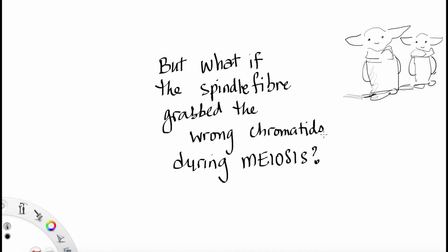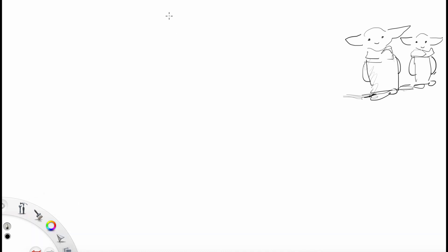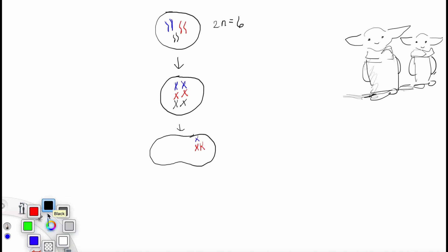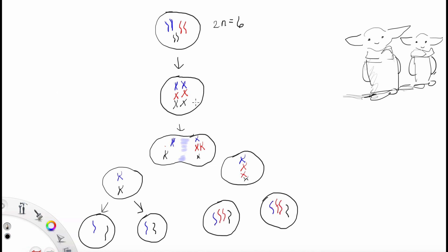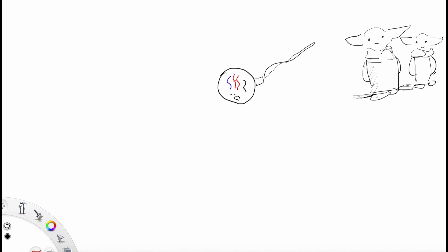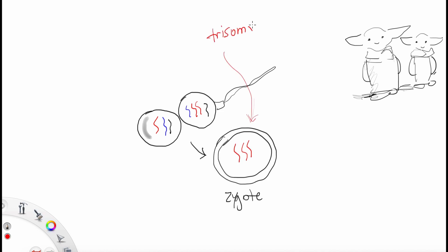But what if the spindle fiber grabbed the wrong chromatid during meiosis? Let's take a look if this happens. So imagine meiosis is happening. And during anaphase 1, if too many of the red chromosomes went off to the right and none went to the left, well then you're going to get some gametes with too many chromatids. This is called primary non-disjunction, when the spindle fiber grabs the wrong thing. So then this sperm is going to fertilize a normal egg. And then we get a zygote with trisomy or too many chromatids. Well, you're going to end up with some really interesting results, such as a double-headed creature. But no worry, the parents love this creature anyway.